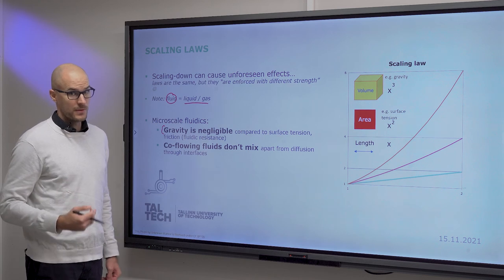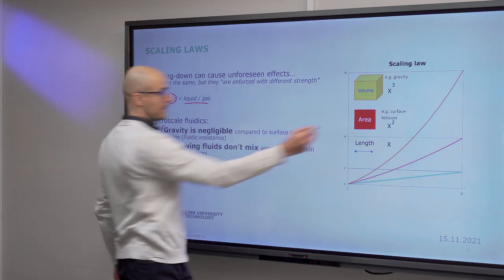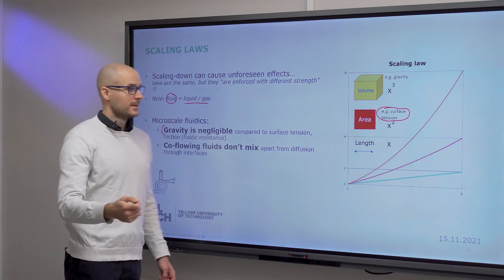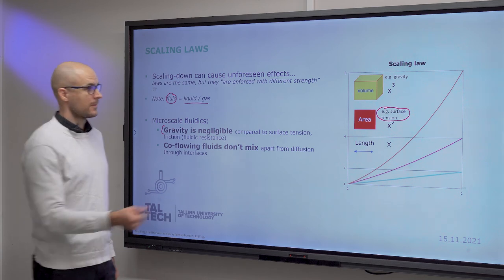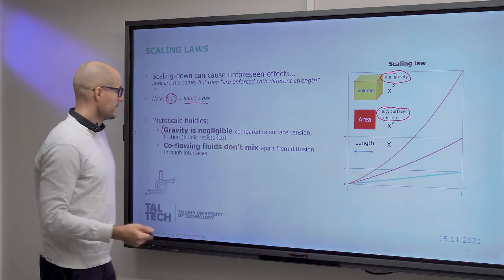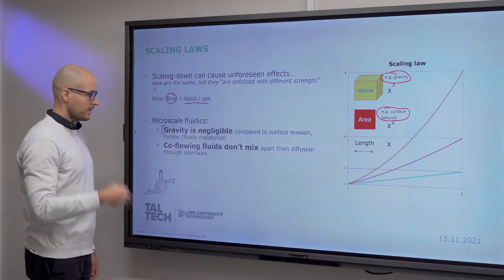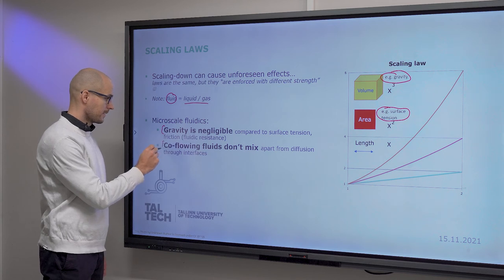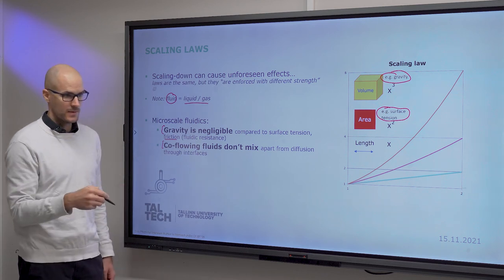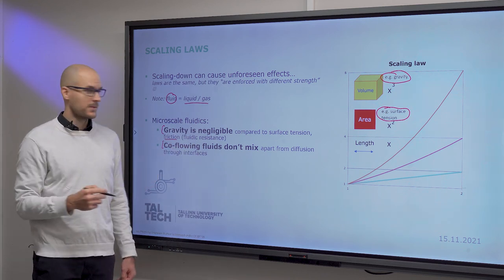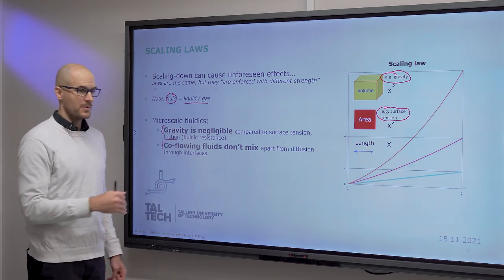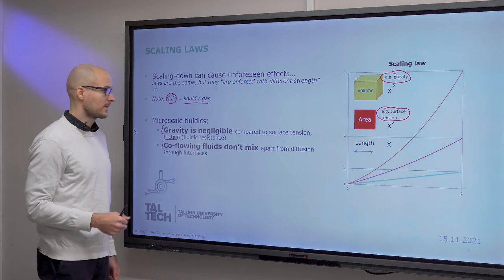Because forces that apply to an area scale by the square of the length, while bodily forces scale to the cube of the length. And this also means that not just surface tension, but also friction. But at the same time, also co-flowing fluids don't mix with each other, apart from diffusion through their interfaces. And this we will see in later slides what it means in practice.